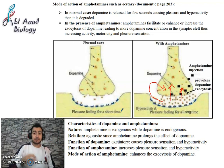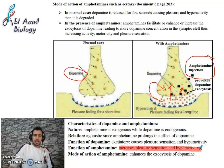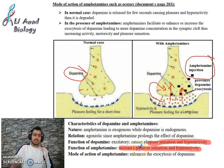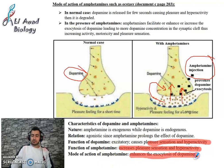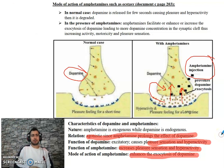Dopamine is endogenous and causes pleasure sensation and activity in general. Amphetamines are exogenous. The function of amphetamines is primarily hyperactivity — more than pleasure. The mode of action of amphetamines is that they enhance the exocytosis of dopamine. This is agonistic — it prolongs the effect of dopamine.